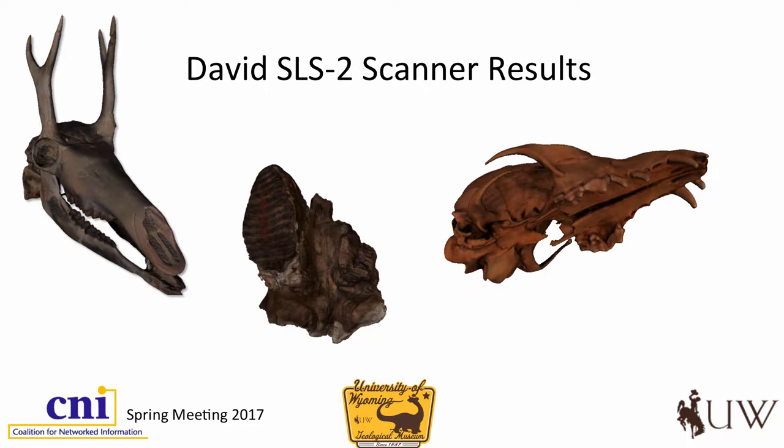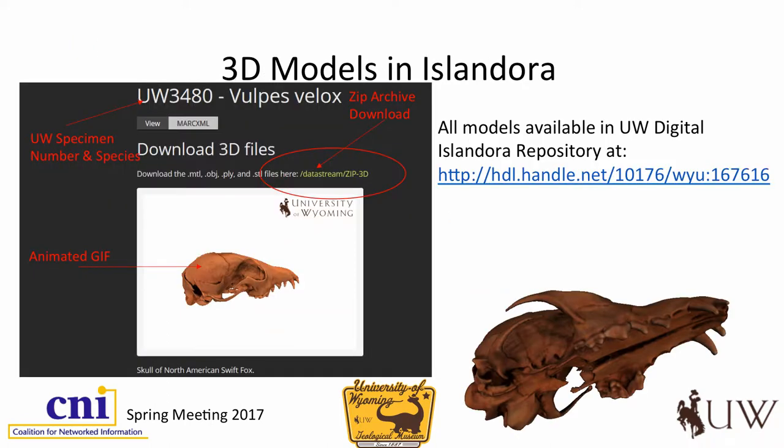These are some of the results we get out of these things — all of various sizes. The one on the top left is an extinct antelope in Wyoming — fitting, since we have about three times as many antelope as we do people. In the middle is a mastodon molar — a very large thing. We had to rotate it manually because it was too heavy for our turntable. And then on the right is a North American fox skull, about three inches across.